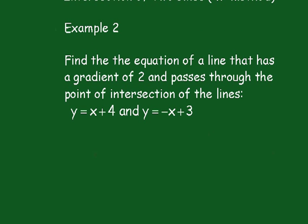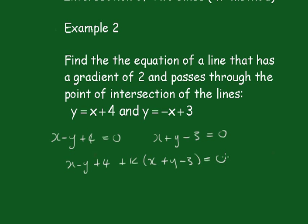We have to put these in the general form. So this will become x - y + 4 = 0. Taking it back the other way, we get x + y - 3 = 0.